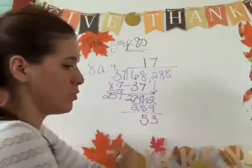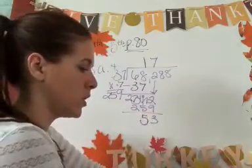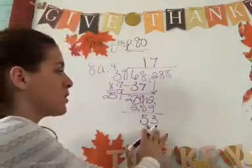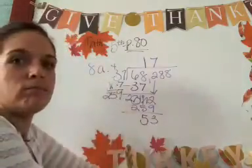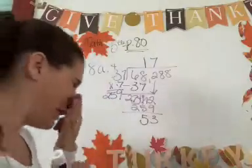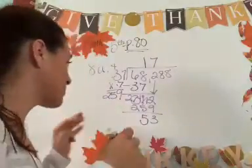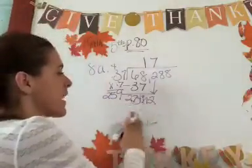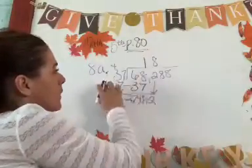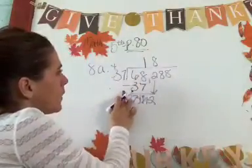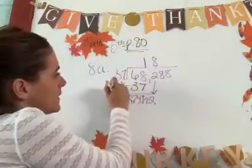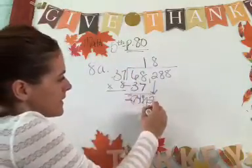But look what happened — 53 is bigger than 37. Que triste, huh? So we've got to erase this stuff and make this an eight. Here we go. Let's make that an eight. Eight times seven is 56. Eight times three is 24, plus five is 29.